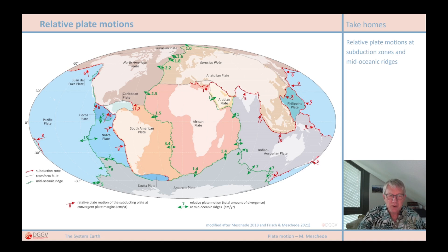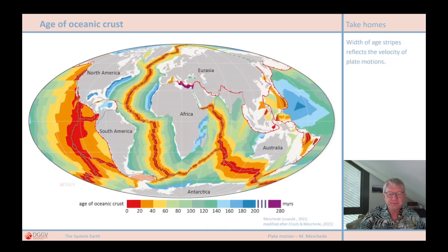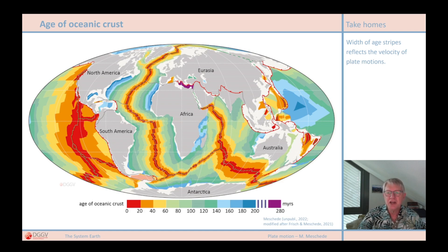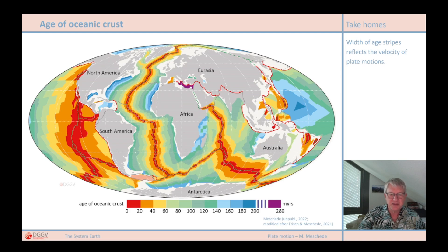But how can we actually measure the movement velocity of lithospheric plates in a global context? First of all, there are the magnetic stripe patterns that I explained in chapter 3.8. The wider the stripes, the more oceanic crust has been produced at the mid-oceanic ridge, and the faster the plates are moving away from each other. The age structure of the oceanic crust can be read from these magnetic stripe patterns. Here in this overview map, we see the age structure of the oceanic crust, from which we can roughly calculate how fast the plates have moved.